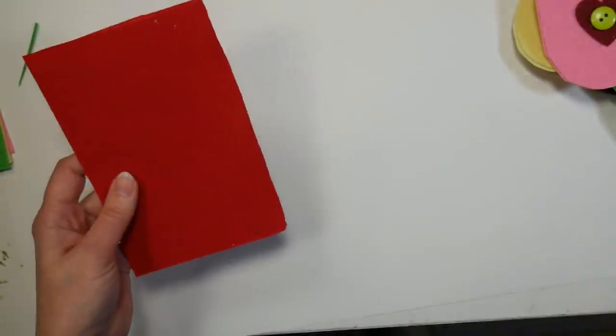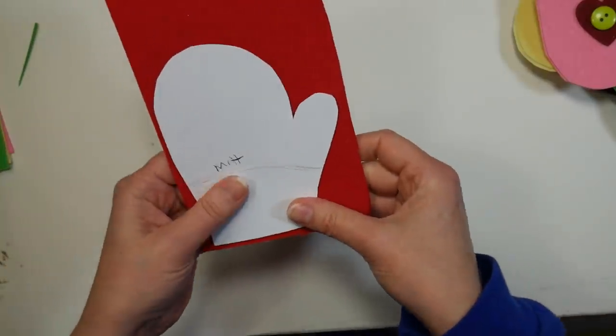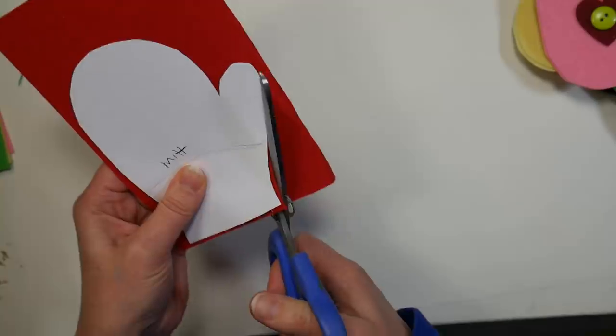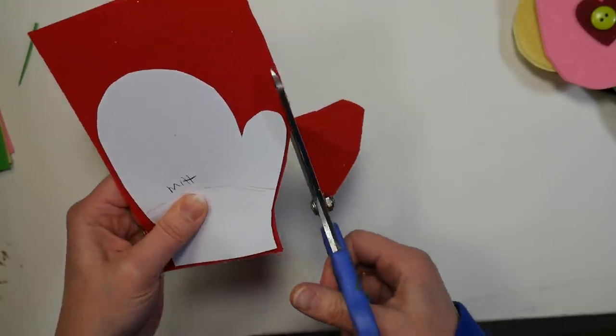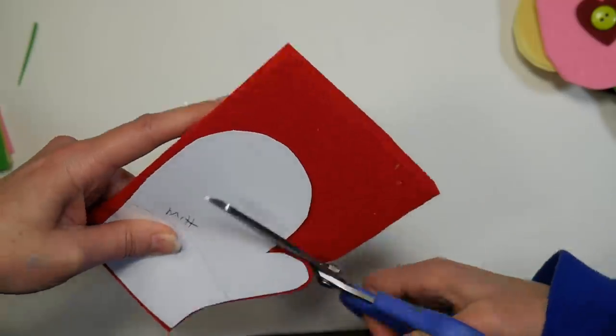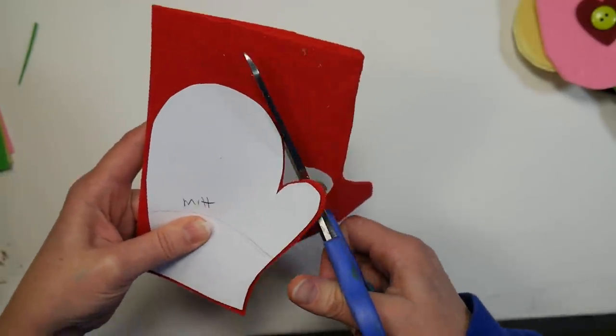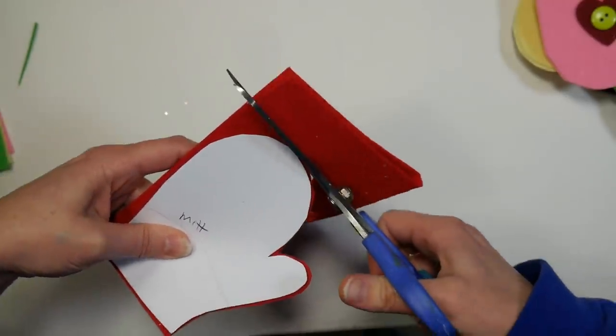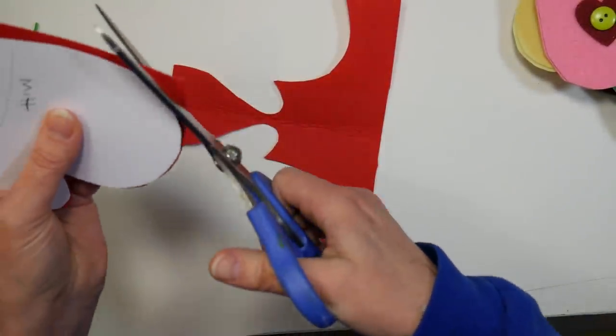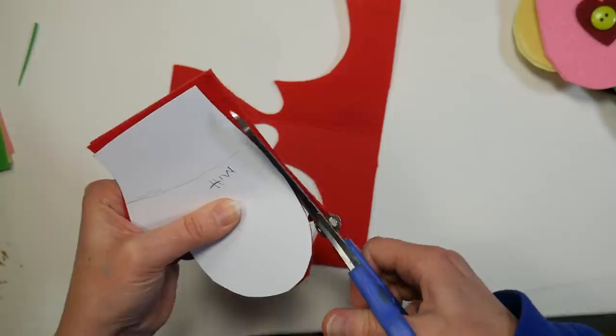And then all I do is I just hold the template onto the felt and I cut around it with my fabric scissors, and the reason I do that instead of drawing it is just because I don't want to have any lines on the edges. Of course if that happens just turn them the other way around, and I cut this on a fold so I'm going to end up with two pieces that are the same size rather than cutting them all individually.